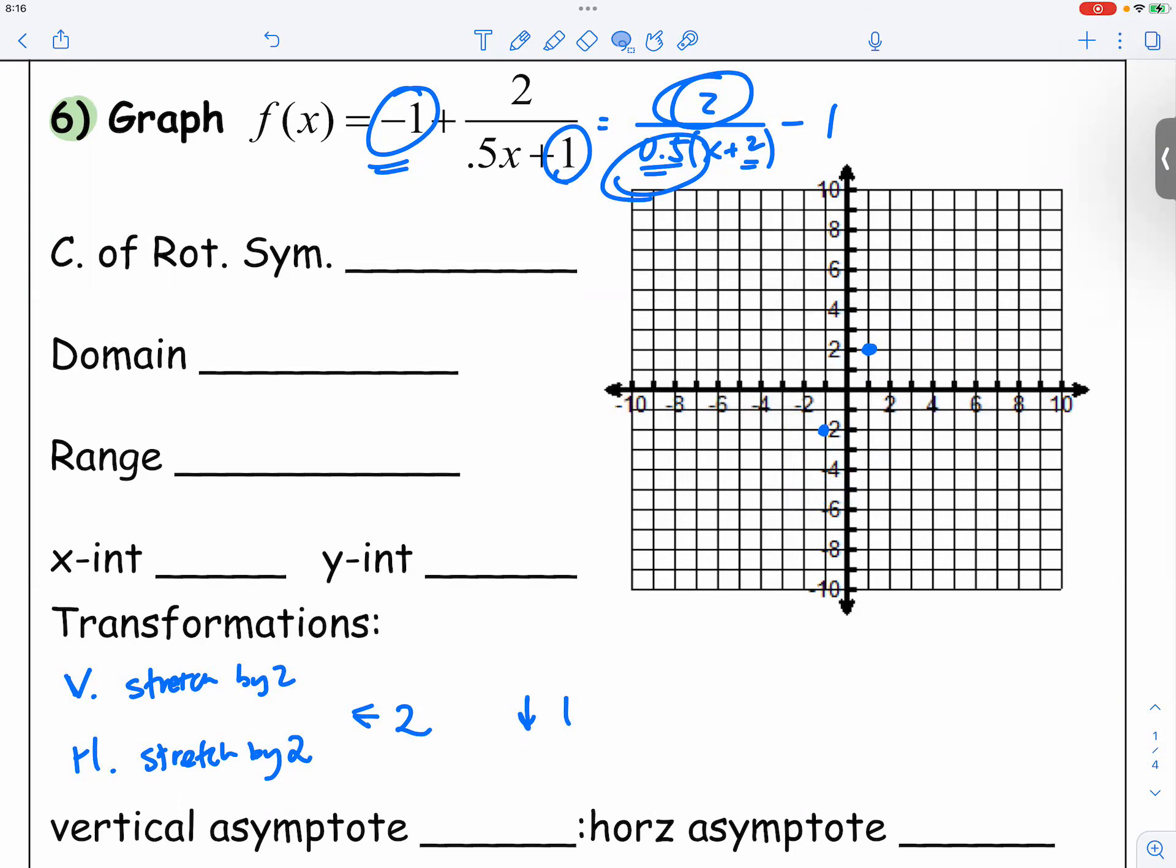And then with the horizontal stretch, the x value goes from 1 to 2, and negative 1 to negative 2. So that's just the vertical and horizontal stretch.